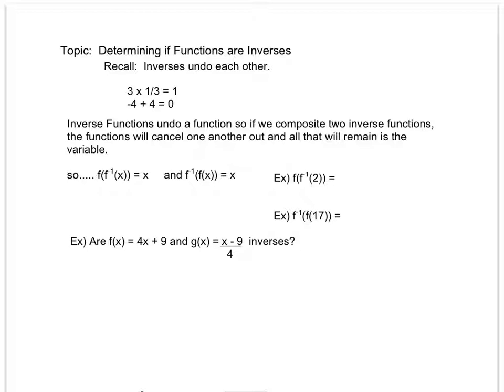Inverse functions, as opposed to undoing a single operation, will undo an entire function. So in order for two functions to be inverses of one another, they have to be able to cancel each other out. Mathematically, here's your formula. This minus 1 notation is f inverse. So f of f inverse of x equals just x, and f inverse of f of x equals just x.